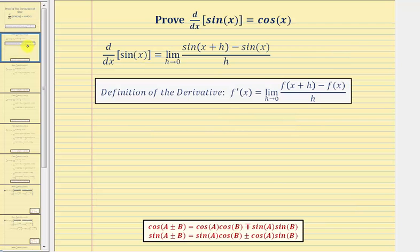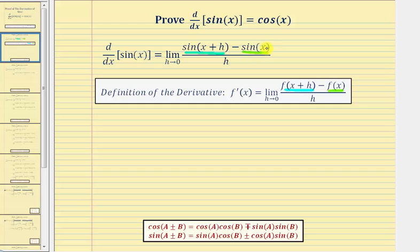Applying the definition of the derivative for f of x equals sine x, we'd have the limit as h approaches zero of f of the quantity x plus h, which would be sine of the quantity x plus h, minus f of x, or minus sine x, all divided by h.